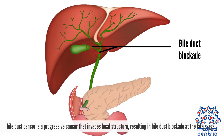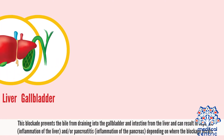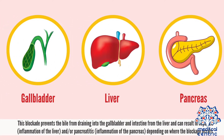Bile duct cancer is a progressive cancer that invades local structures, resulting in bile duct blockage at the late stage. This blockage prevents bile from draining into the gallbladder and intestine from the liver, and can result in hepatitis, or inflammation of the liver, and/or pancreatitis, inflammation of the pancreas, depending on where the blockage occurs.